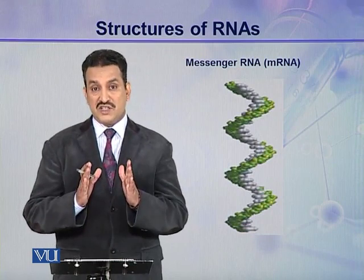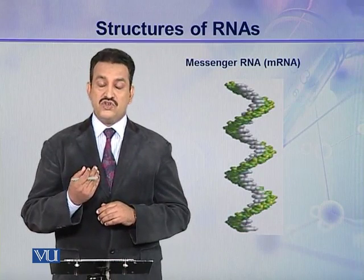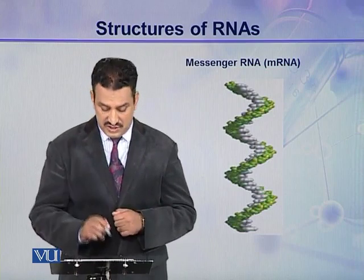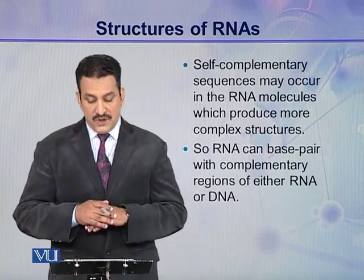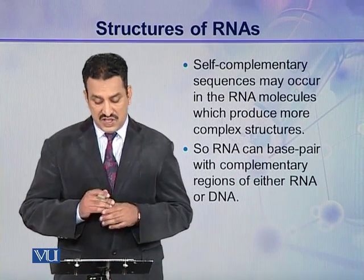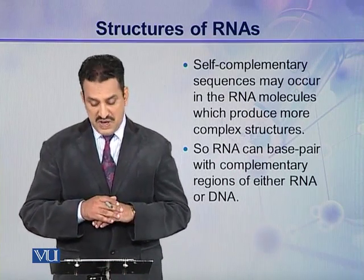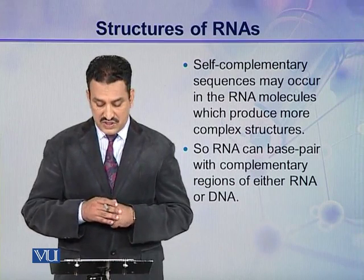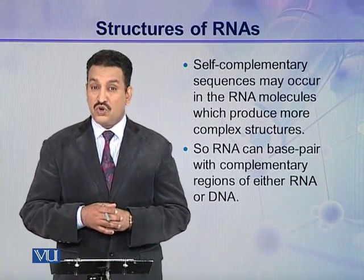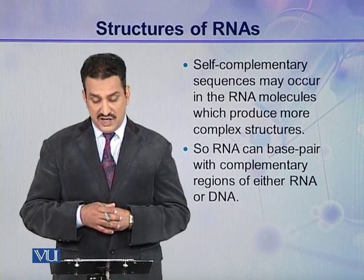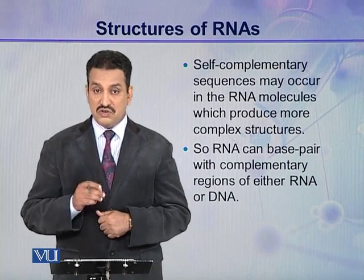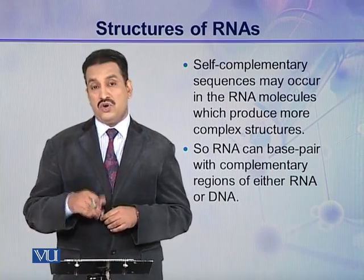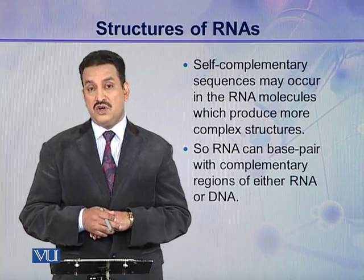In DNA, two strands are helically coiled around an imaginary axis. But here only a single strand is coiled around an imaginary axis, forming a helix. Some self-complementary sequences may occur in RNA molecules and these may produce more complex structures. RNA can base pair with complementary regions of either the same RNA, other RNA, or DNA molecules.